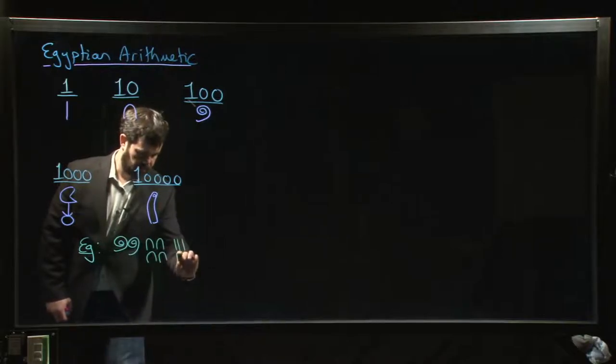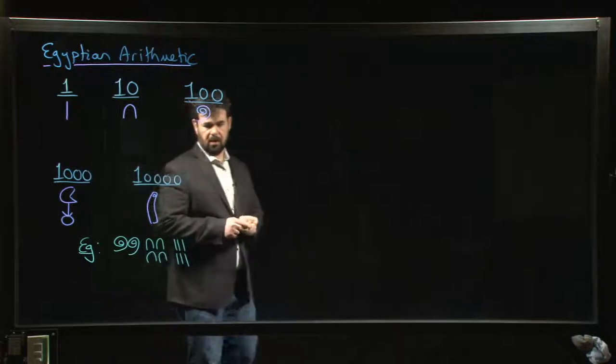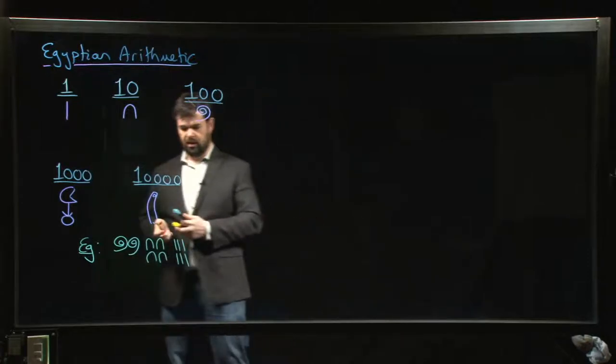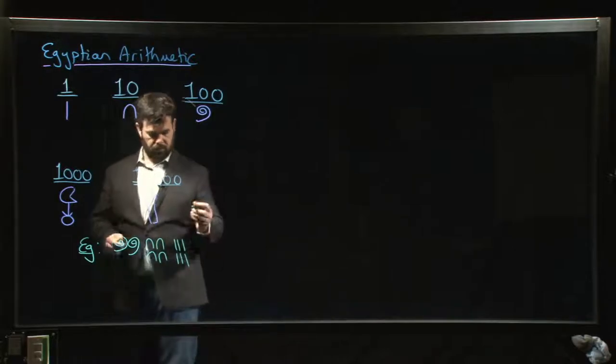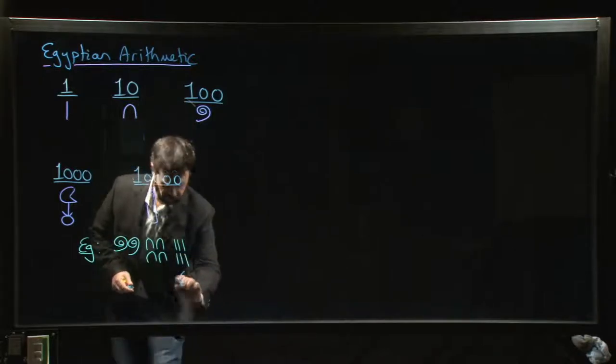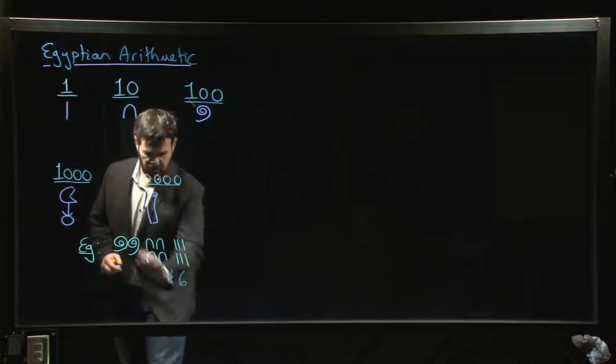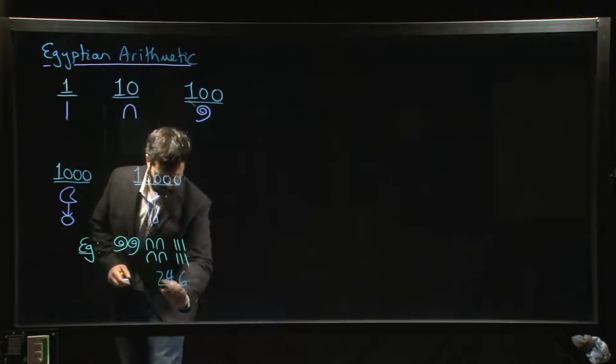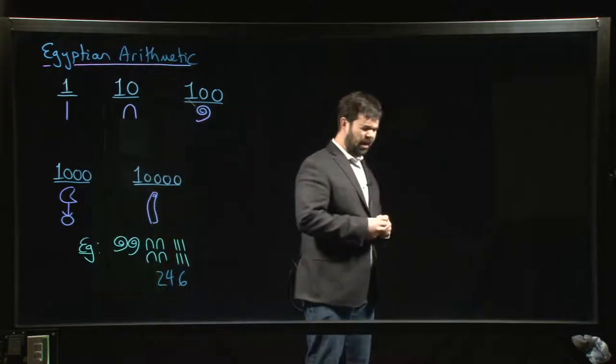How do you know what that number is in our system? Well, you just count everything up. There are six ones, there are four tens, and there are two hundreds. So that's the number two hundred and forty-six.